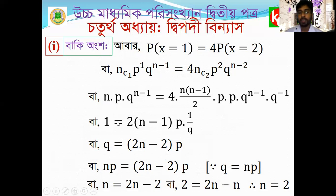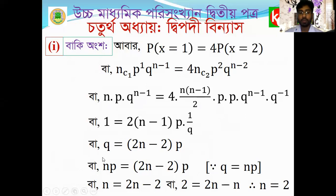Then we notice the pattern: n minus 1, then n minus 1. We write p and q^(n-1). So q minus 1 plus q minus 1 gives us 2n minus 2. We set q equals np. Putting p on the left side: n equals 2n minus n, and n becomes 2.